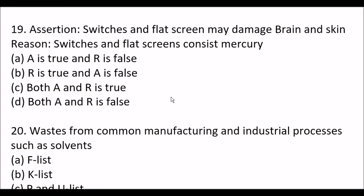Next assertion-reason: Assertion - switches and flat screens may damage brain. Reason - switches and flat screens consist of mercury. Here, assertion is true but reason is false. So focus on this type of question - assertion is true, but reason is false.